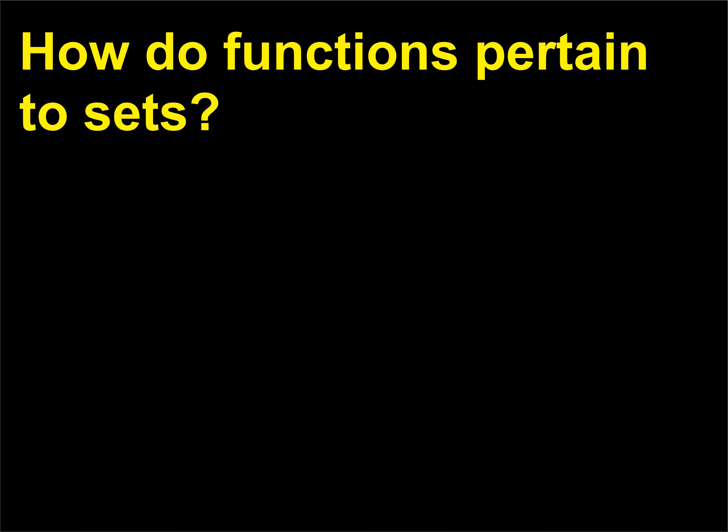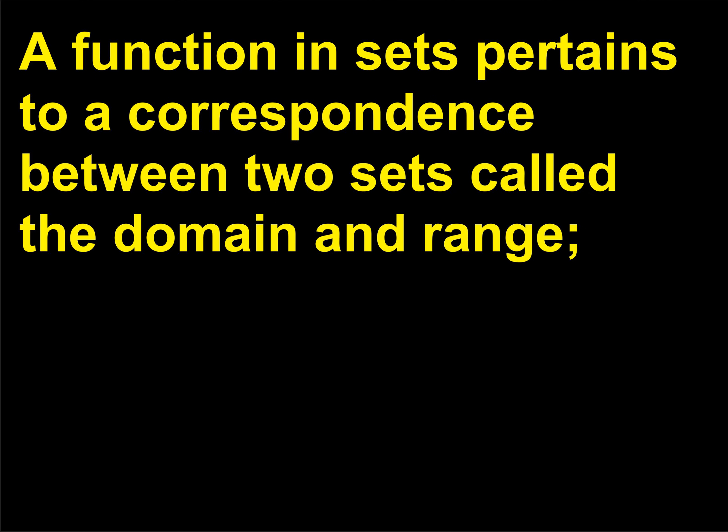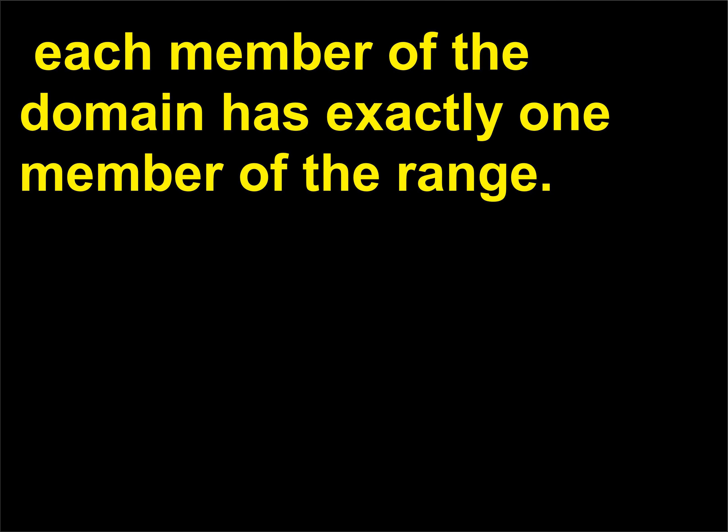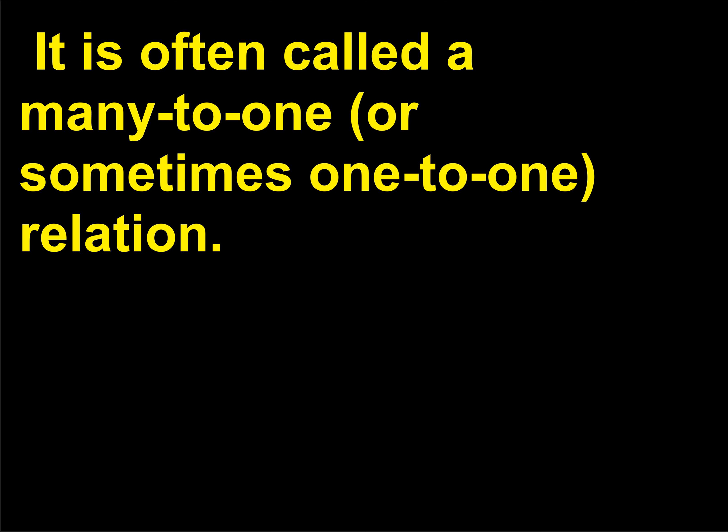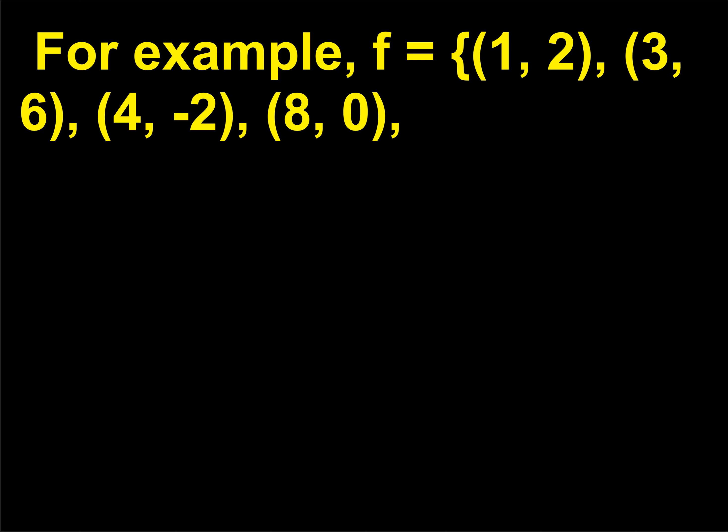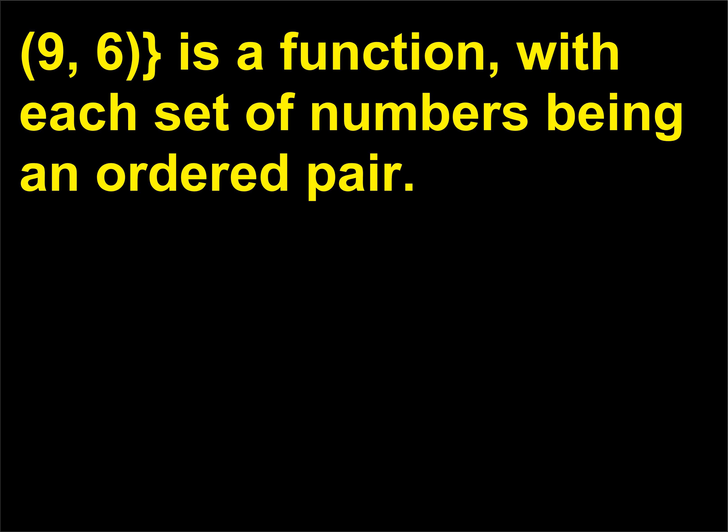How do functions pertain to sets? A function in sets pertains to a correspondence between two sets called the domain and range. Each member of the domain has exactly one member of the range. It is often called a many-to-one, or sometimes one-to-one, relation. For example, f = {(1,2), (3,6), (4,−2), (8,0), (9,6)} is a function, with each set of numbers being an ordered pair.